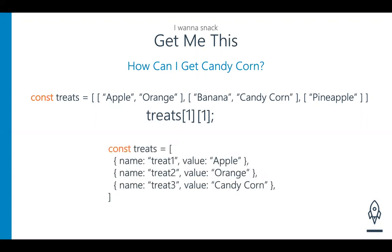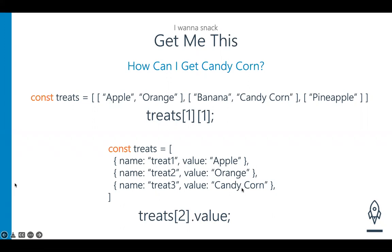So we get candy corn out of the two-dimensional array with bracket notation of one and then bracket notation of one: treats[1][1]. Now looking at an array of objects, to get candy corn you'd still start with bracket notation. If it's the third index, that's index two. Once you've gotten that object out of the array, you call to it with dot notation — for example, treats[2].value.